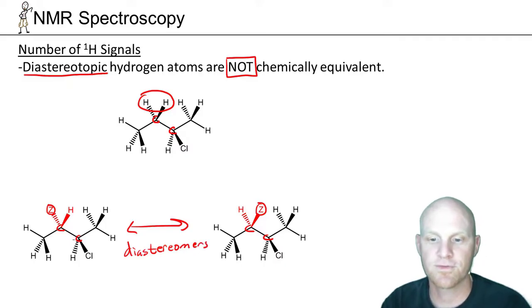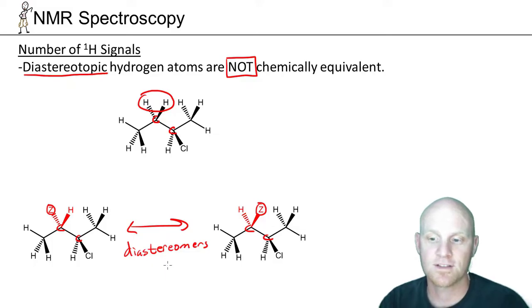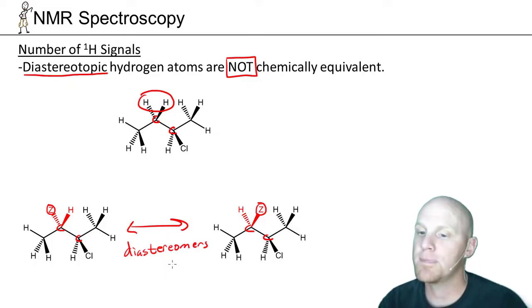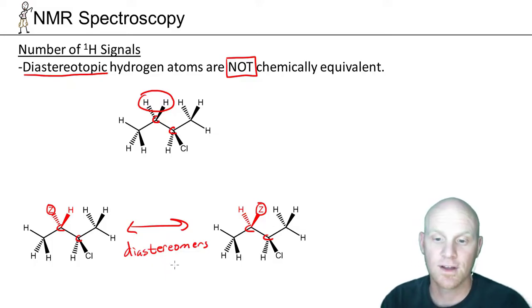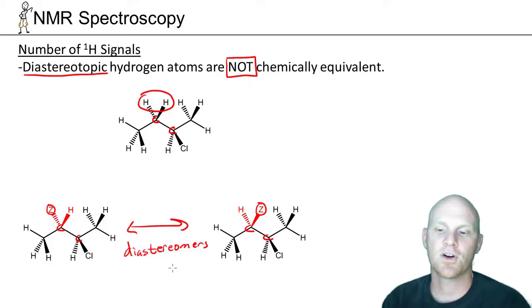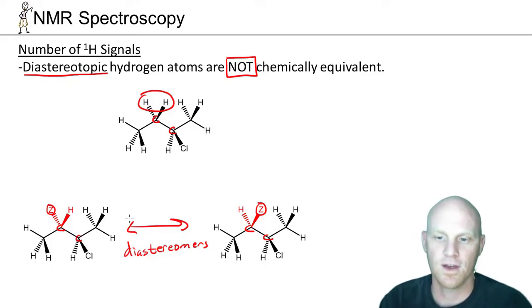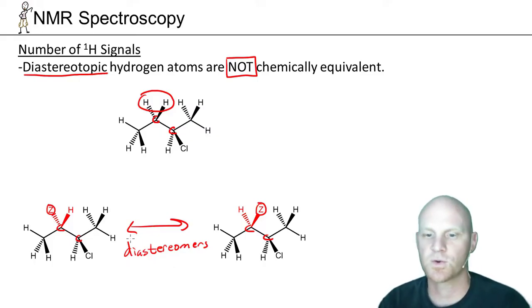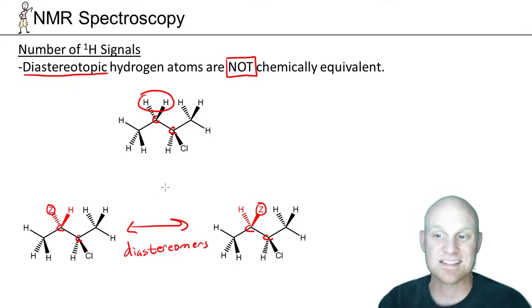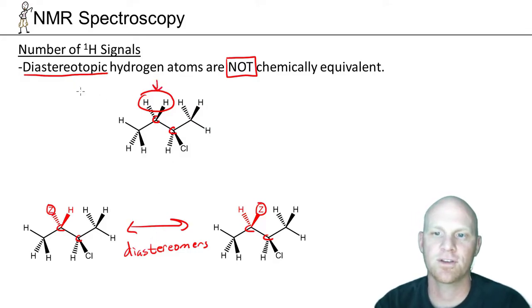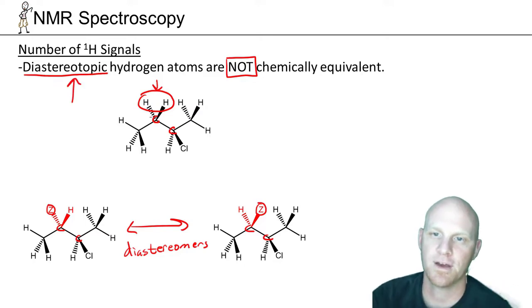Two different chiral centers each with four different groups — one in the same configuration, one in opposite configurations. They're not mirror images but they're not identical, so they're stereoisomers that are not enantiomers — we call them diastereomers, non-superimposable, non-mirror images. When you sequentially replace the two H's with Z and end up with a relationship of diastereomers, those two hydrogens are diastereotopic.